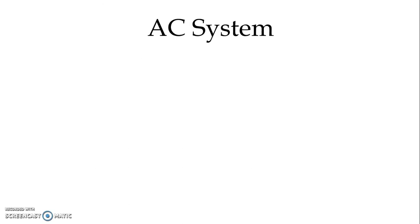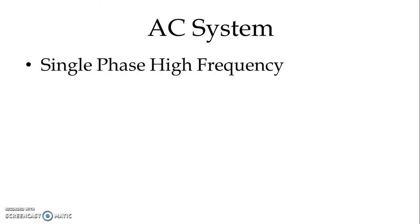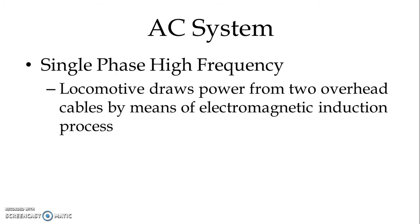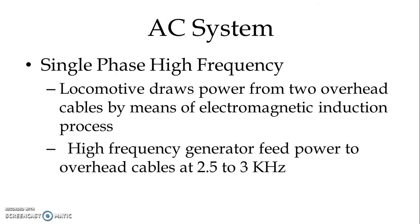Another classification in the AC system is the single phase high frequency system. In certain cases, for example coal mines, sparking from the overhead conductor to the pantograph must be avoided. In that condition, a single phase high frequency system is used where the locomotive draws power from two overhead cables by means of electromagnetic induction — a contactless current condition. A high frequency generator feeds power to the overhead cables at a frequency as high as 2.5 to 3 kHz.